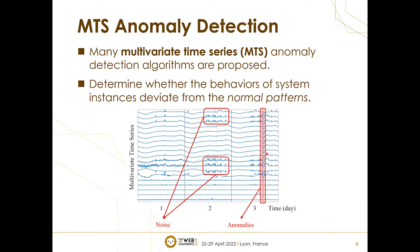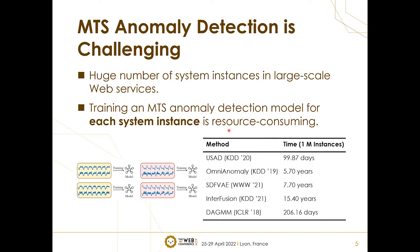Recently, a collection of MTS anomaly detection methods have been proposed. An MTS anomaly detection model learns the normal patterns of a system instance and determines whether the behaviors of this system instance deviate from the normal patterns. Because web services can have thousands of running containers, virtual machines, and physical machines, training an MTS anomaly detection model for each system instance will consume a lot of computational resources. This table shows that when the number of system instances reaches 1 million, the accumulated offline training time of some popular approaches ranges from 100 days to several years, which is infeasible.